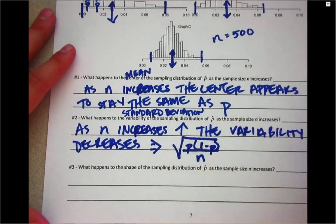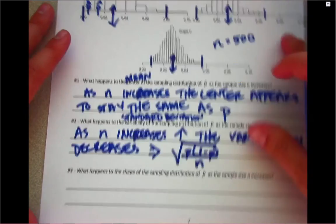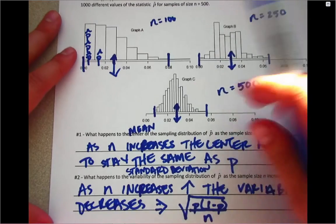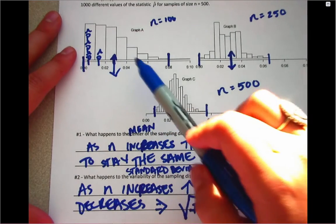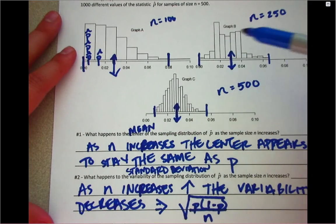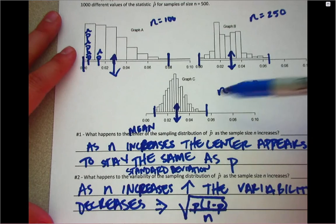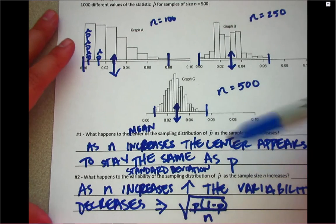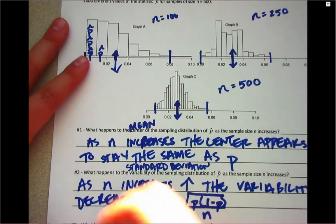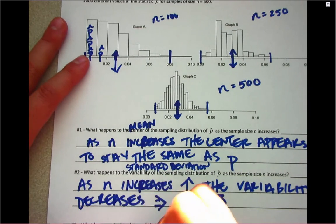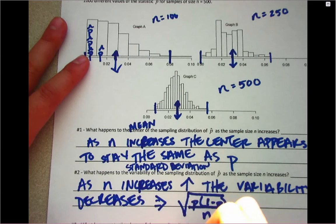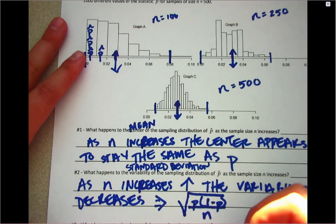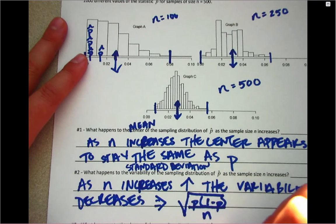When you look at the shape of the distributions, the first one doesn't have much of a bell shape. But the second is becoming more bell-shaped, and the third is very bell-shaped. So as n increases, the graph begins to look more and more like a bell shape — more normal.